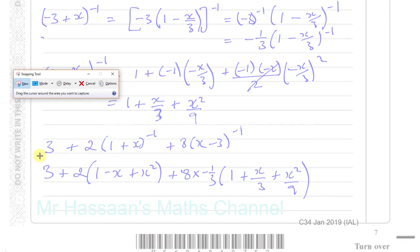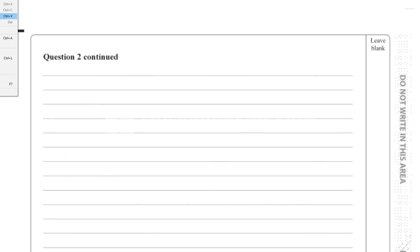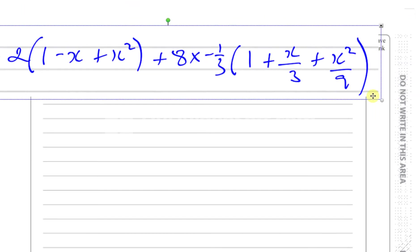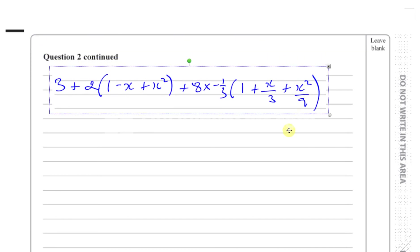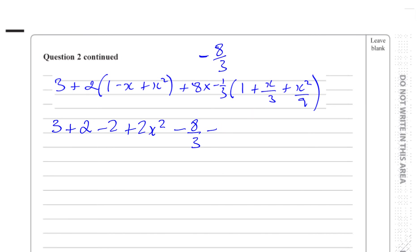Let me take this across to finish off the question. Expanding: 3 + 2(1) - 2x + 2x², then the second bracket gives minus 8/3. Multiplying through: minus times minus is plus, so minus 8x/9, and then minus 8x²/27.